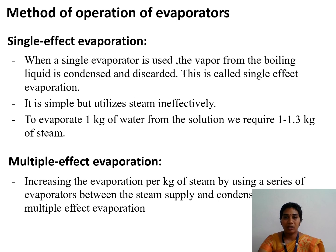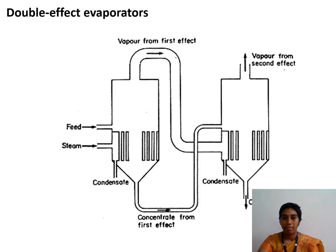A single effect evaporator has only one evaporator — it is simple to use but has inefficient operation. To evaporate 1 kg of water, it requires 1 to 1.3 kg of steam. In a multiple effect evaporator, using 1 kg of steam can evaporate around 0.7 to 0.8 kg of water more efficiently. A double effect evaporator has 2 evaporators.